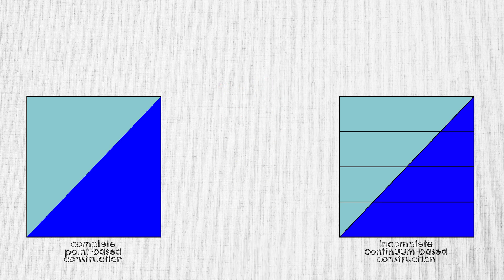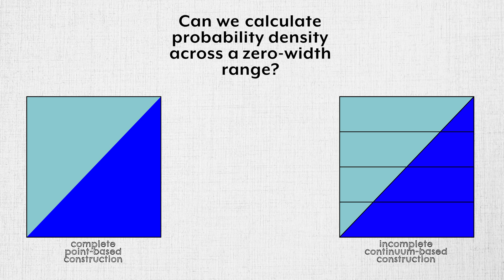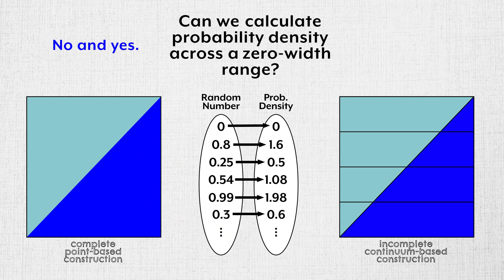So if you ask me, can we calculate probability density across a 0 width range? With the point-based construction, I would say no and yes. No, because we never want to divide by 0, so what we do is calculate probability densities for ranges approaching 0 width. Yes, because we end up with probability densities across 0 width ranges. We have a probability density for every real number between 0 and 1, and the relation between these two infinite sets is the probability density function.